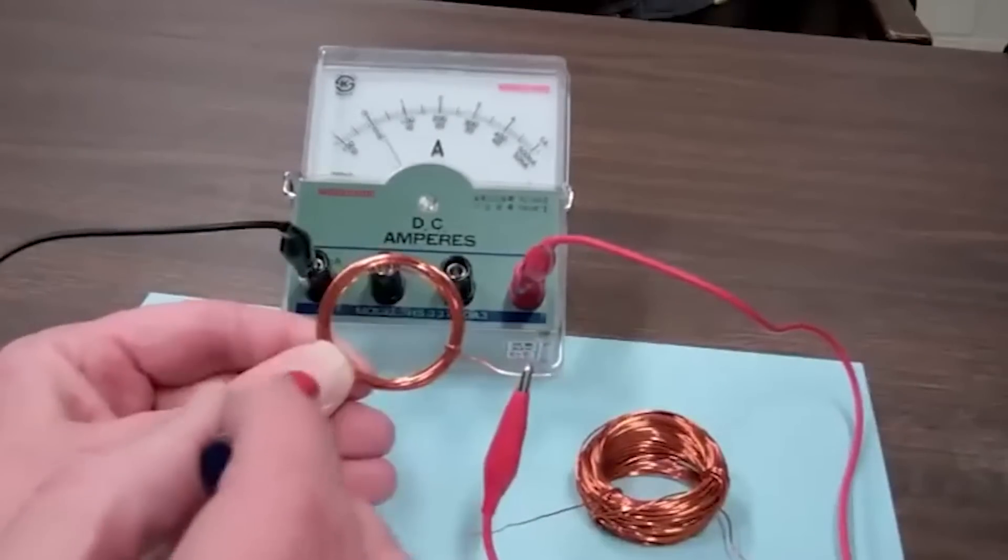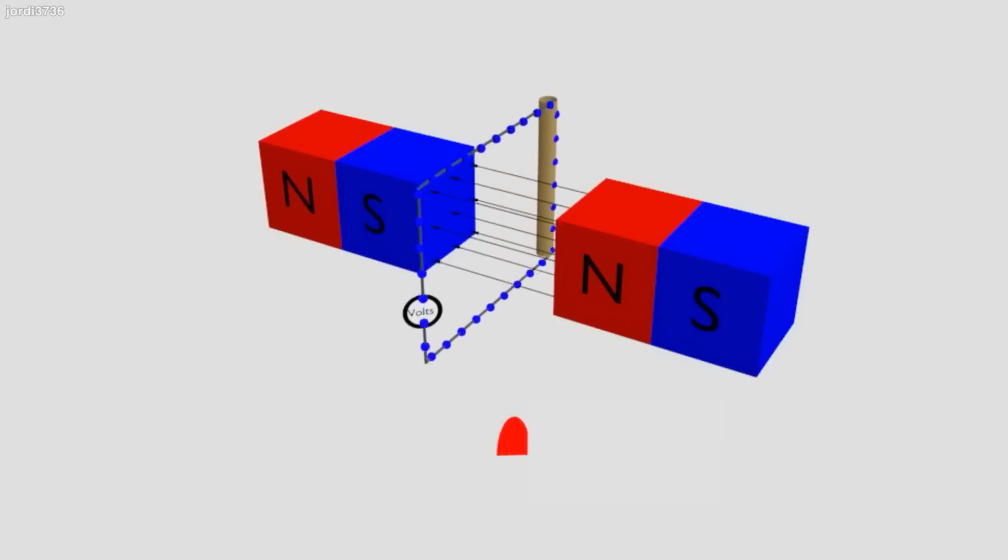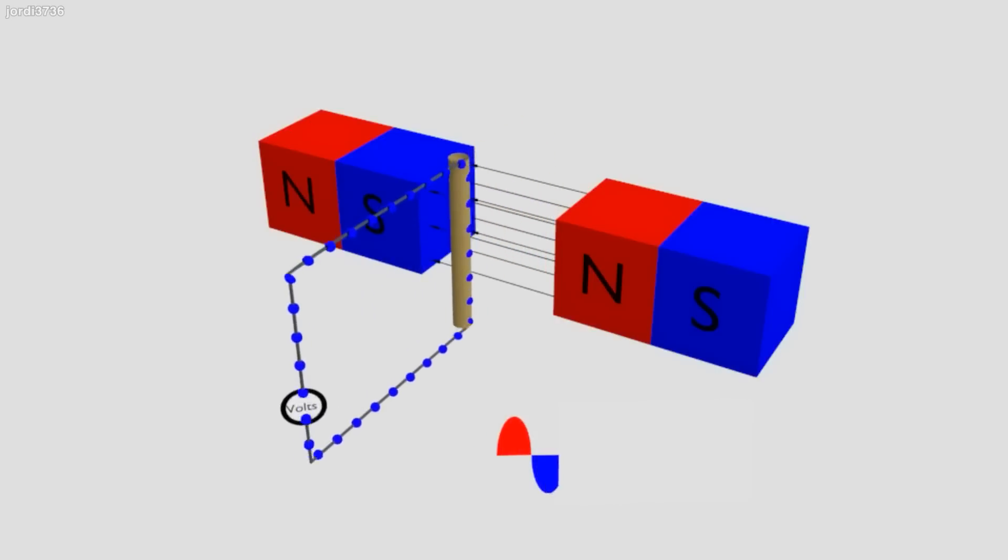which is when moving electric charges create magnetic fields, and changing magnetic fields can induce electric currents.